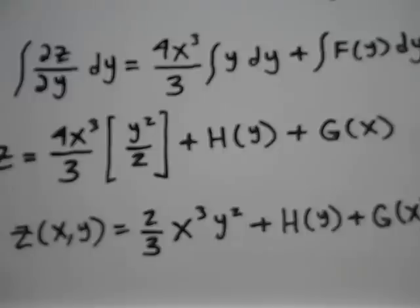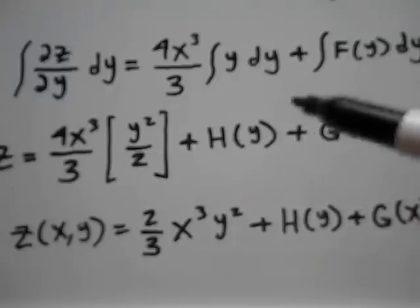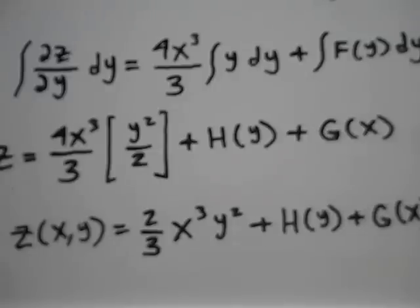And so that would be the solution to this partial differential equation — the partial derivative of z with respect to both x and y is equal to 4x squared y.